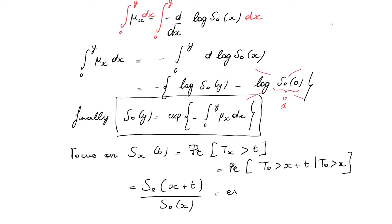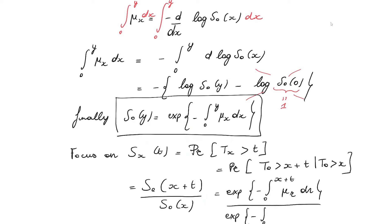Plugging in the integral expression for the survival function of a zero-year-old, we get the exponential of minus the integral from zero to X plus T of μ(R) dR, divided by the exponential of minus the integral from zero to X. Note that I switch to integration variable R because X is already used as the upper bound. Simplifying this ratio of two exponential functions, I retrieve the exponential of minus the integral from X to X plus T of μ(R) dR.